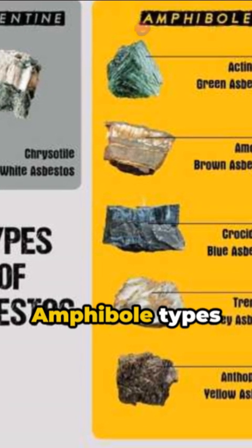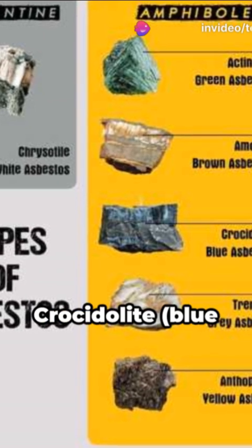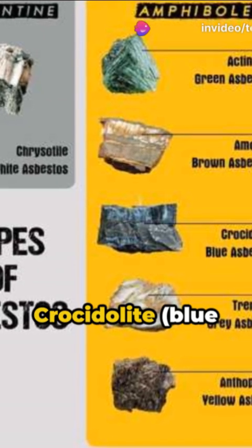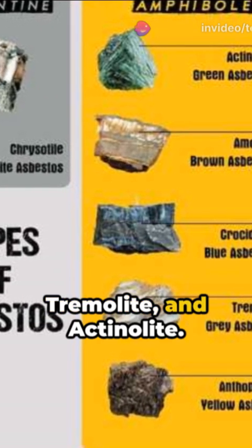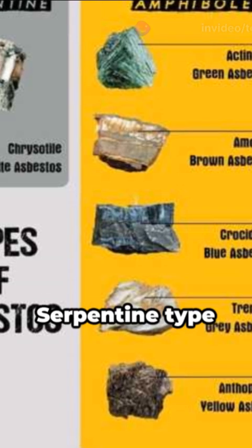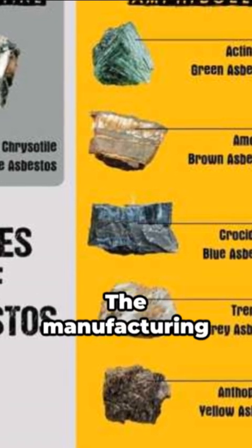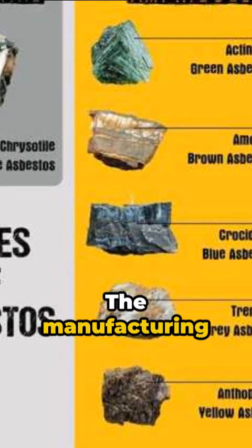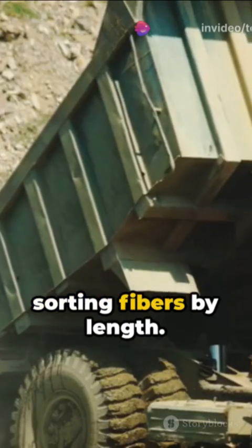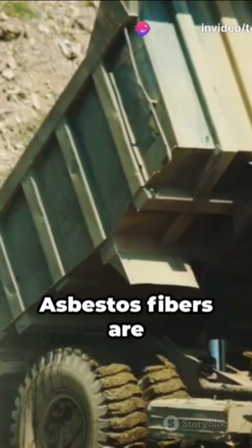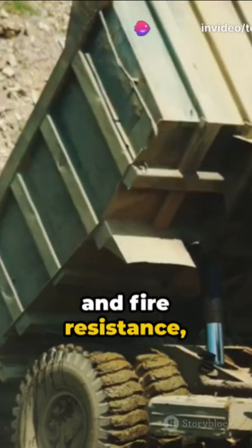Amphibole types include amosite (brown asbestos), crocidolite (blue asbestos), anthophyllite, tremolite, and actinolite. The serpentine type includes chrysotile, or white asbestos. The manufacturing process involves mining, crushing, and sorting fibers by length.